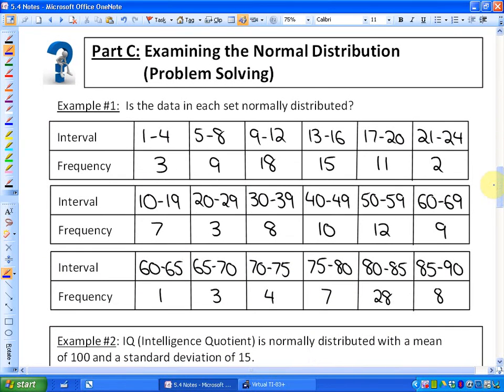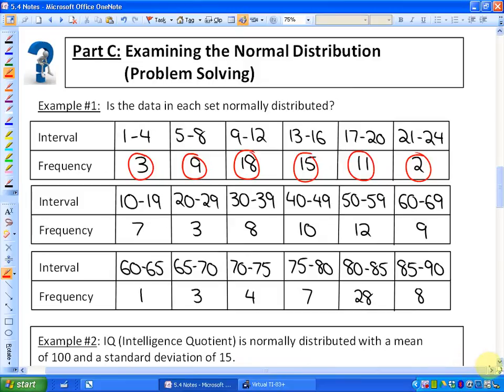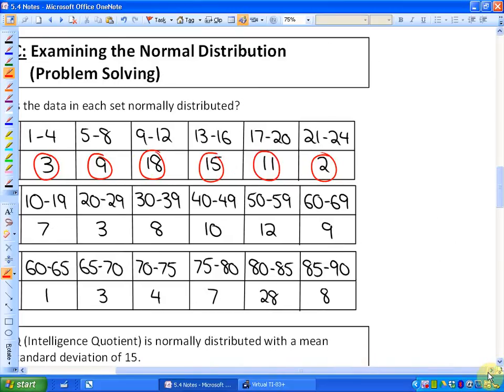But before we do that, let's look at some things that may or may not be normally distributed. So example number one here says, is the data in each set normally distributed? So regardless of what this data is about, I'm noticing that there's intervals and frequencies. So we're looking at these numbers. Essentially, is what's happening here, is most of the data in the middle or towards the mean? And does it get less and less as we go further and further from the mean in either direction?